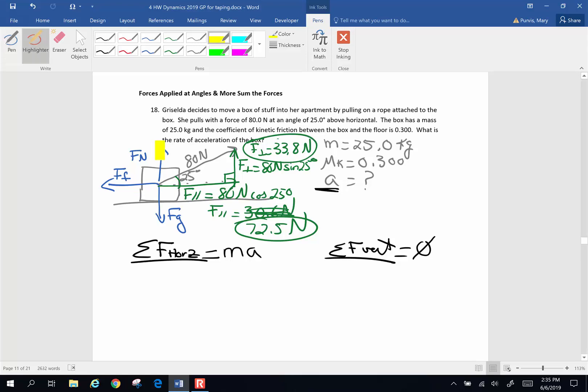I'm going to highlight all my forces. This is an up force, this is an up force, this is a down force. Sideways forces. So horizontally, I have force parallel minus the force of friction is going to make my mass accelerate. Vertically, the forces up are going to equal the forces down. So force normal plus force perpendicular are going to equal force of gravity.